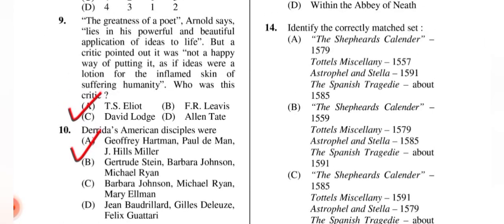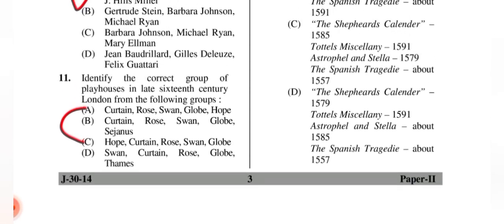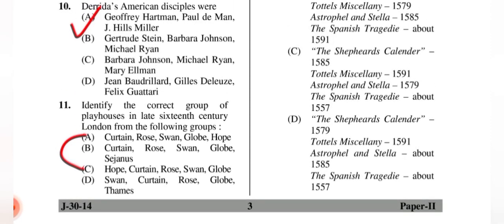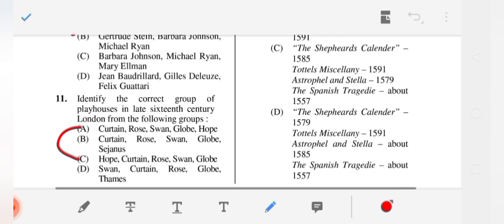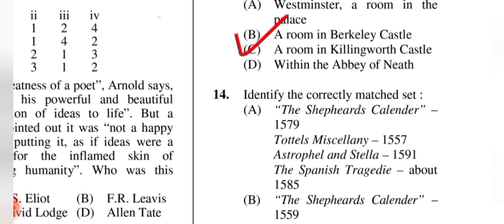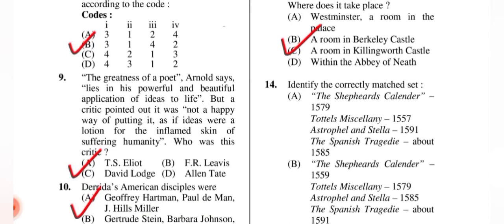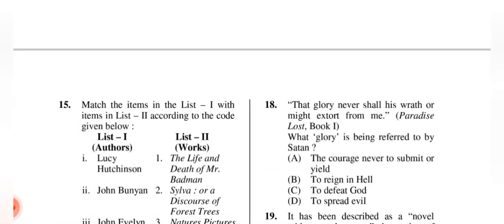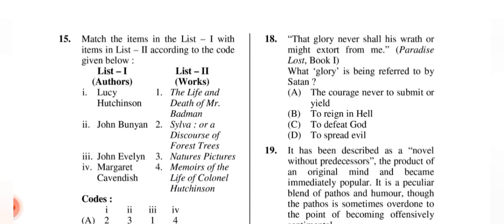Question 14: Identify the correct match set. The correct answer is (A): 'The Shepheardes Calender' — 1579; 'Tottel's Miscellany' — 1557 (note: speaker says 27, likely error); 'Astrophel and Stella' — 1591; 'The Spanish Tragedy' — about 1585.